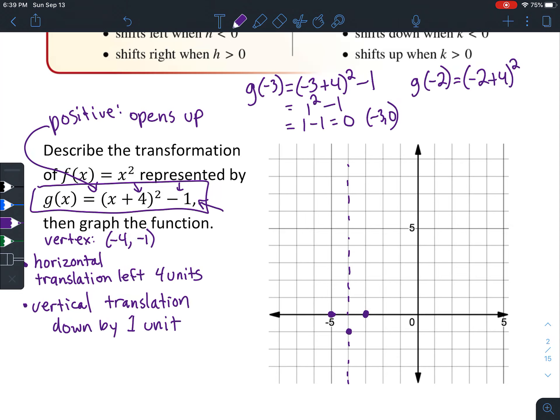Next we're going to find one more point so we know kind of how far it goes out. So we're going to have g(-2) equals negative 2 plus 4 squared minus 1. Negative 2 plus 4 is positive 2. 2 squared is 4. 4 minus 1 is 3. So your input is negative 2, your output is 3.